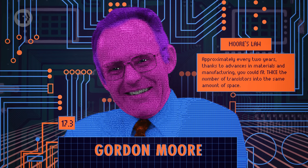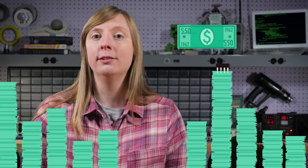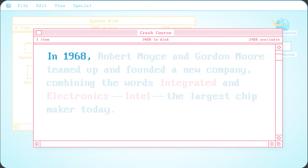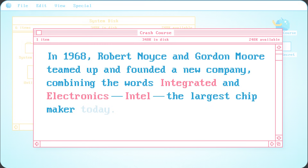This is called Moore's Law. The term is a bit of a misnomer though – it's not really a law at all, more of a trend. But it's a good one. IC prices also fell dramatically, from an average of $50 in 1962 to around $2 in 1968. Today, you can buy ICs for cents. Smaller transistors and higher densities had other benefits too. The smaller the transistor, the less charge you have to move around, allowing it to switch states faster and consume less power. Plus, more compact circuits meant less delay in signals, resulting in faster clock speeds. In 1968, Robert Noyce and Gordon Moore teamed up and founded a new company – combining the words integrated and electronics – Intel, the largest chipmaker today.